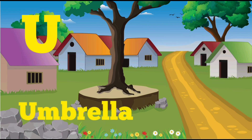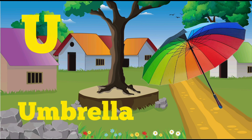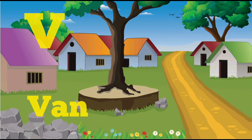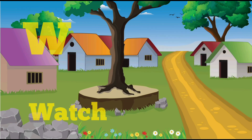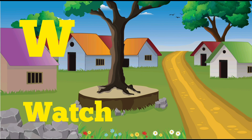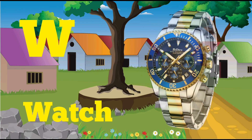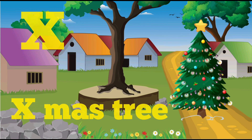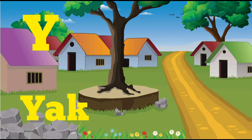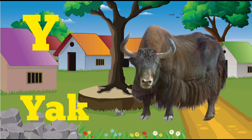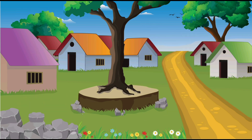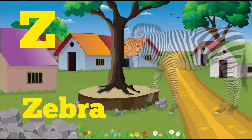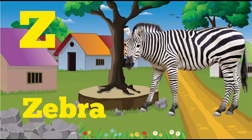T for tiger, U for umbrella, V for van, W for watch, X for xmas tree, Y for yak, Z for zebra.